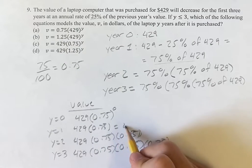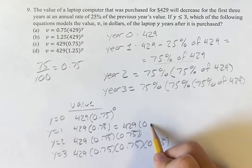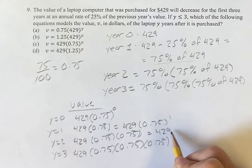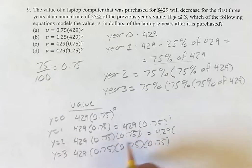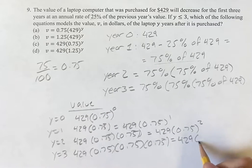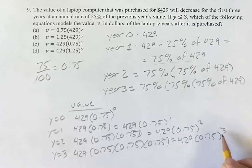This is going to be 429 times 0.75 to the 1. This is going to be 429 times 0.75 squared because there's two of them. And this is going to be times 0.75 cubed because there's three of them.